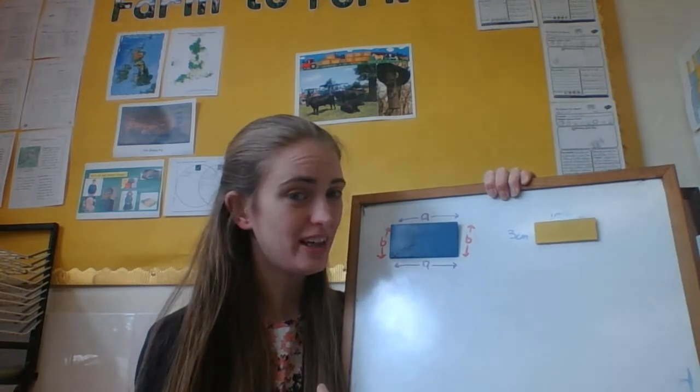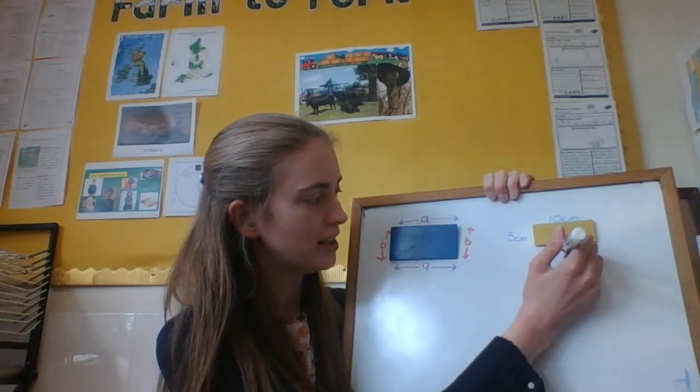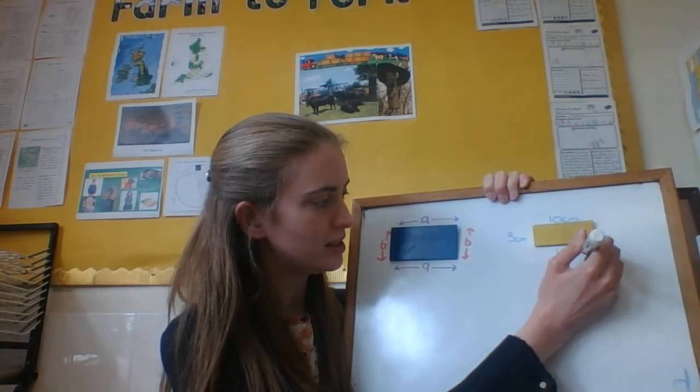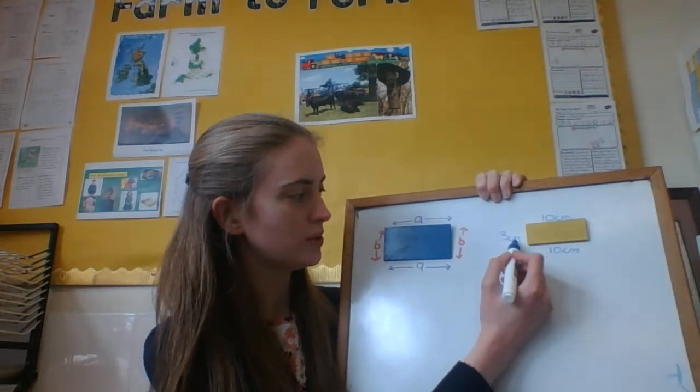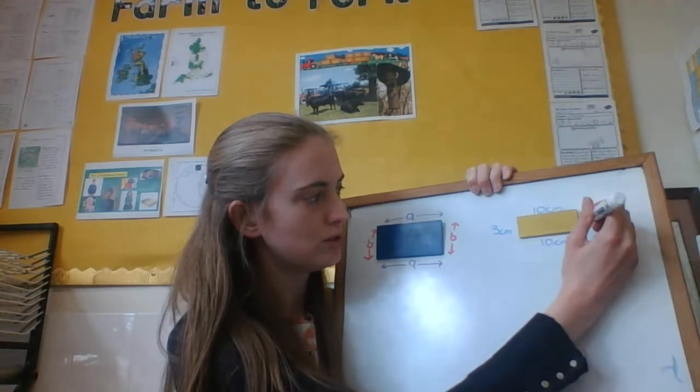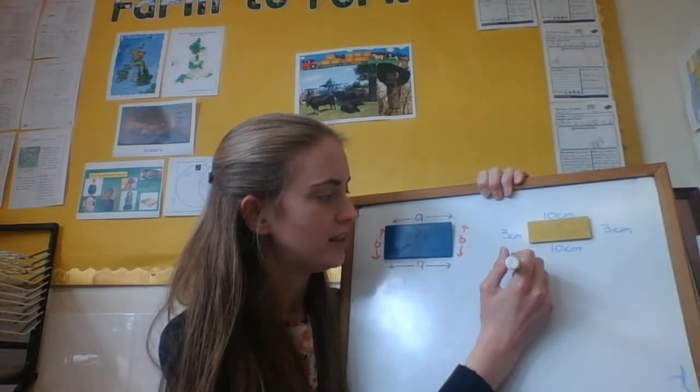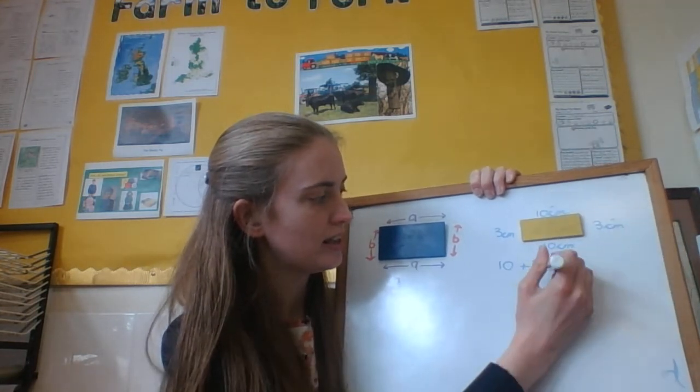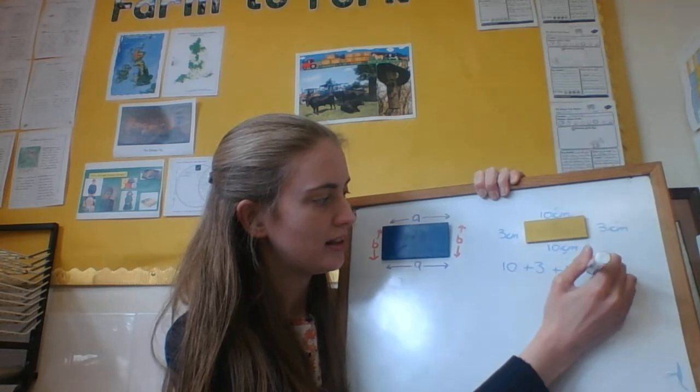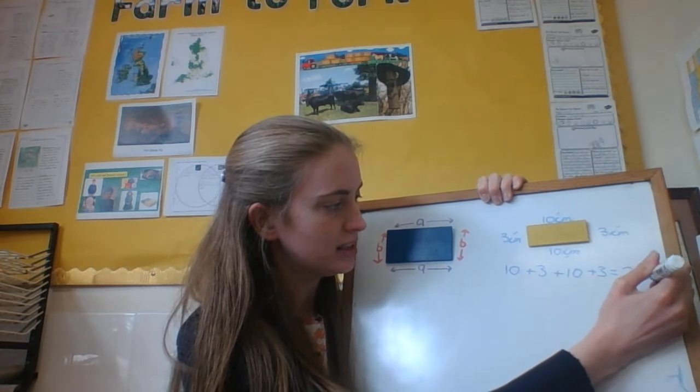Now I know that that means, because these two are the same, that this one must also be 10 centimetres. And because I know that these two are the same, that this one is 3 centimetres, so this one must also be 3 centimetres. So I can find out all of the sides and then do 10, add 3, add 10, add 3, which equals 26 centimetres.